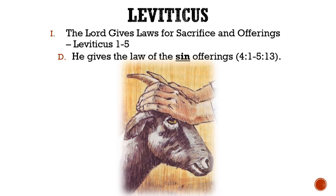If the offender could not afford the lamb or goat, then they were allowed to bring two young turtle doves or pigeons. If they were still too poor to bring that, they could offer one-tenth of an ephah of fine flour without oil or frankincense. This offering also included sins committed in ignorance.